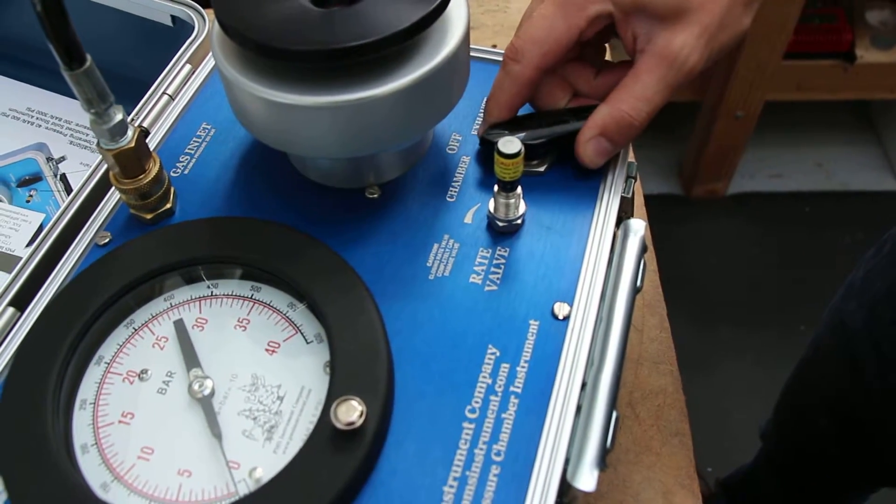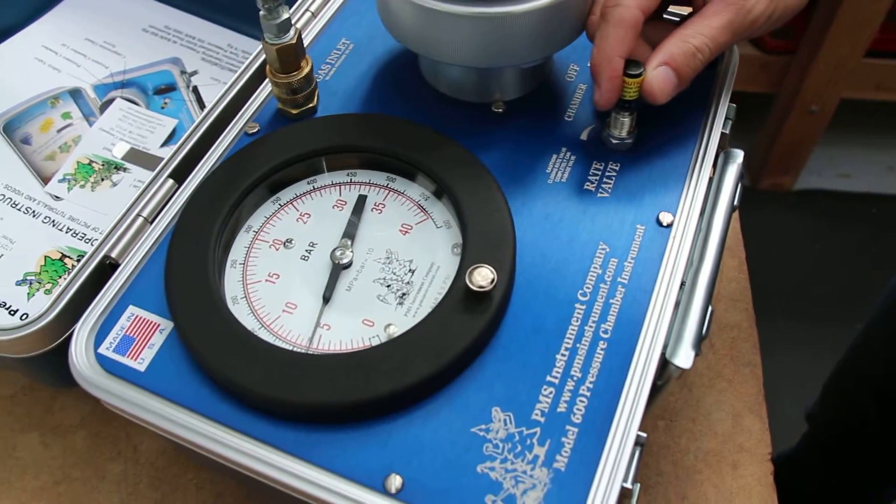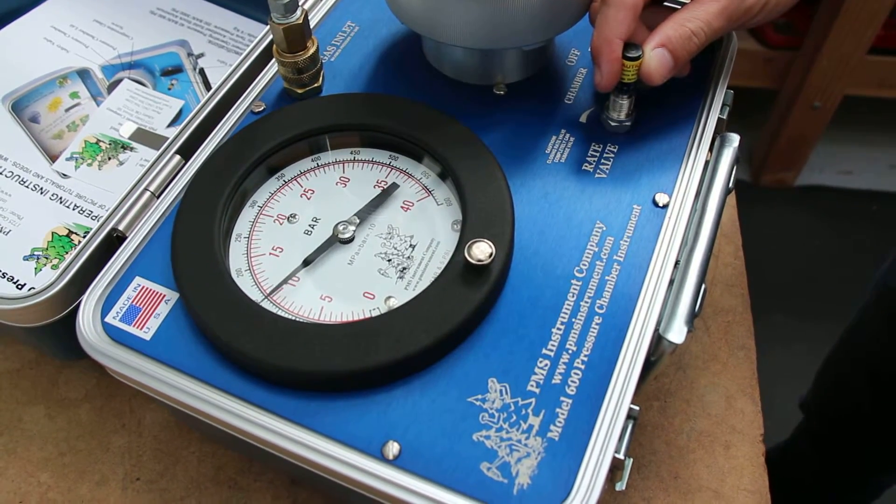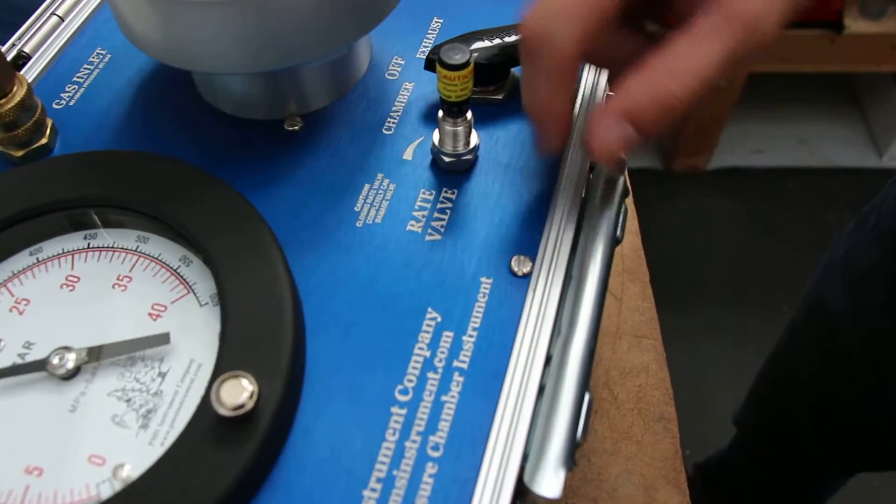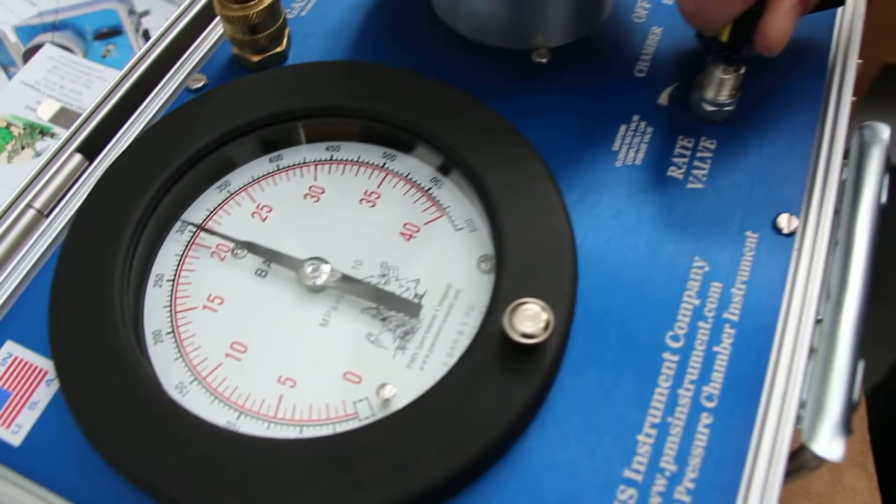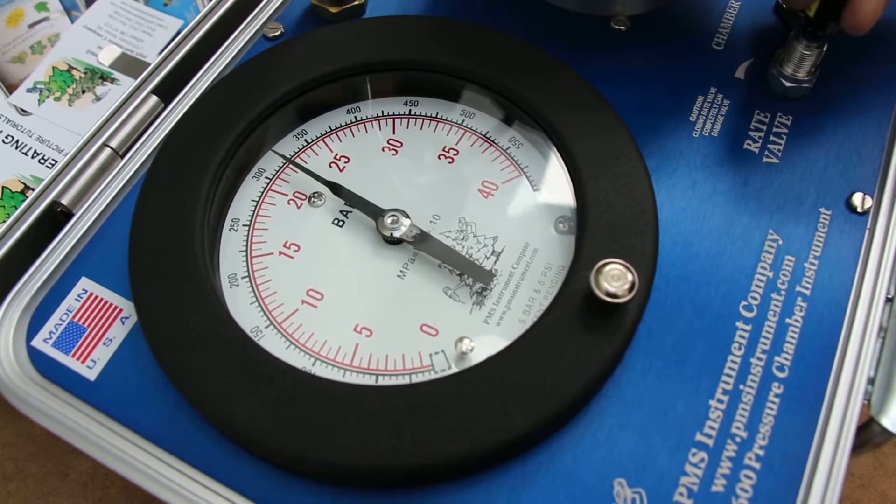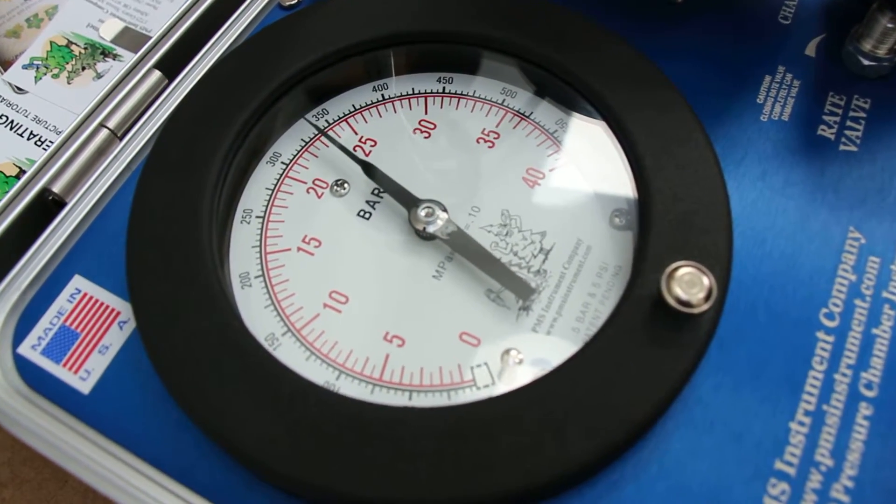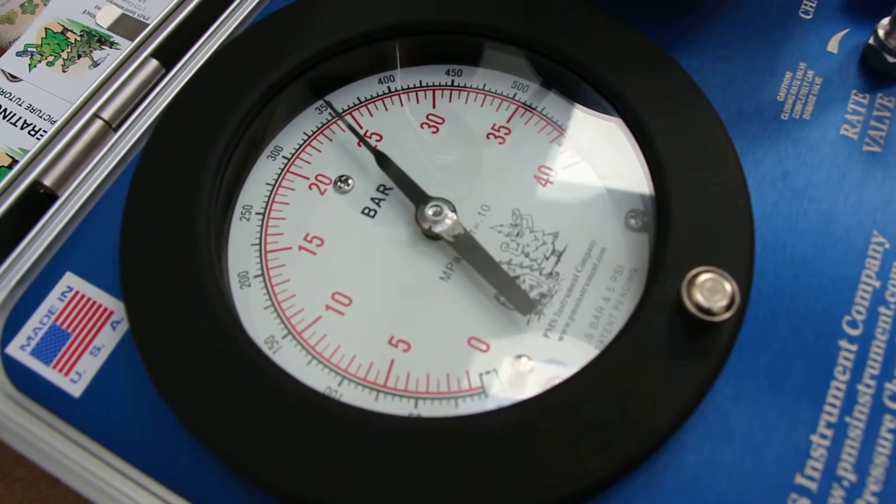Now we're using the rate valve. Tighten it clockwise to slow the rate of pressure into the chamber. What we would like to achieve is about half a bar per second.